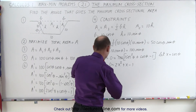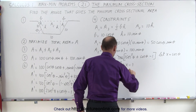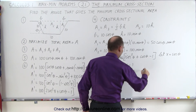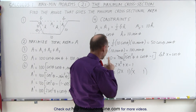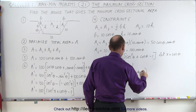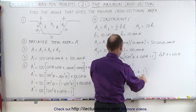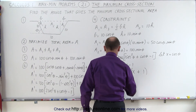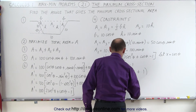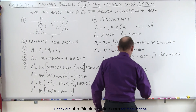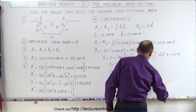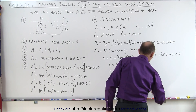Factoring: 0 equals (2X minus 1)(X plus 1). The signs work out because 2X times positive 1 is 2X, and X times negative 1 is minus X, giving a positive X in the middle. So either X plus 1 equals 0, giving X equals negative 1, or 2X minus 1 equals 0, giving X equals one-half.